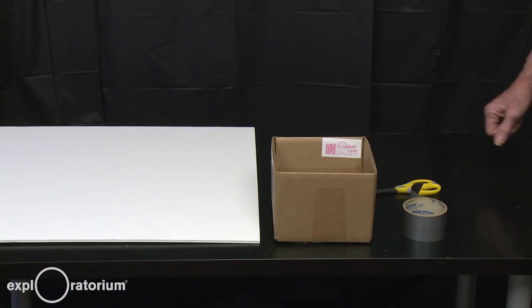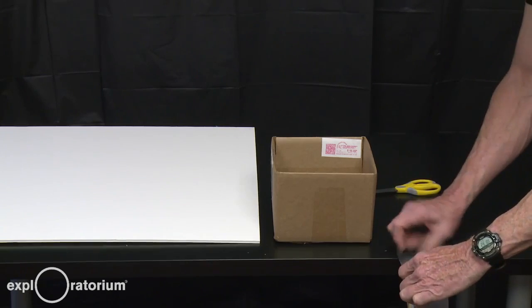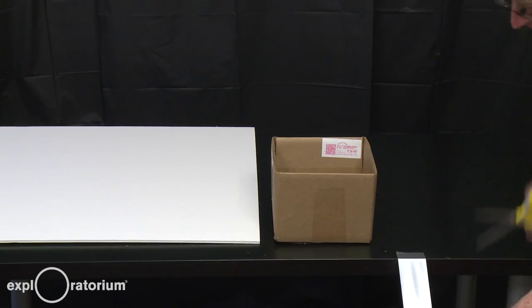To mount the foam core to the box to make it stand upright, the first thing you're going to do is cut a couple pieces of duct tape about four inches long.